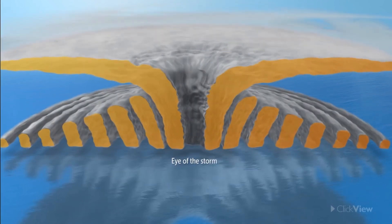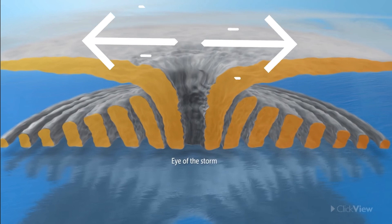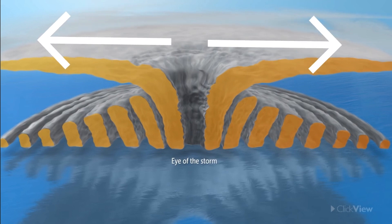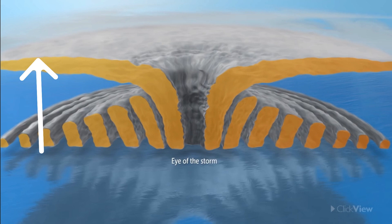The average diameter of a tropical cyclone is around 150 to 250 kilometers, with an average altitude of about 12 to 18 kilometers.